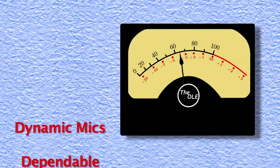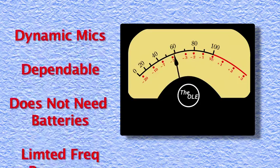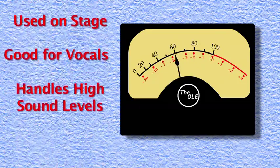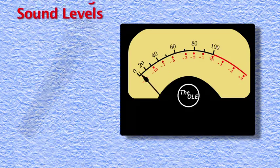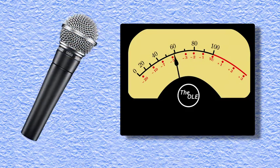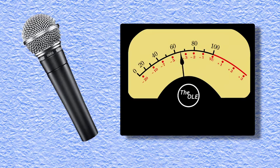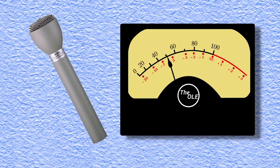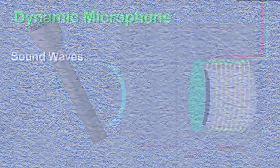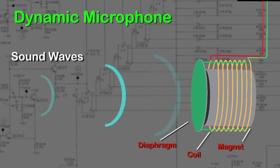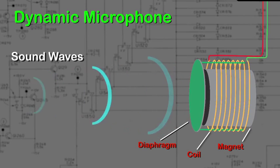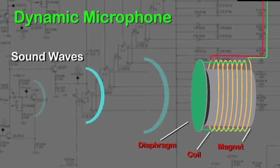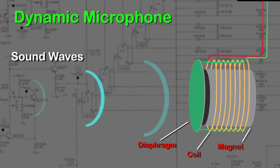Dynamic microphones are widely used in professional audio, especially for live events due to their ruggedness and simple design. One of the most recognized dynamic microphones is the Shure SM58, but it is only one of many dynamic microphones available. A dynamic microphone works by sound waves striking the flexible diaphragm, which is attached to a coil of very thin wire that is wrapped around a magnet.